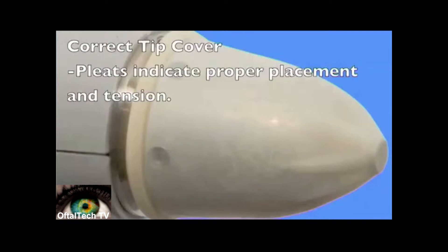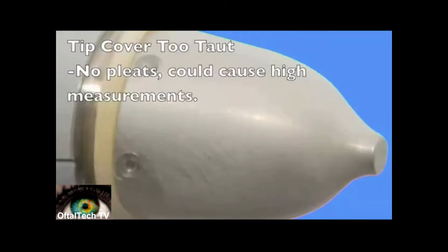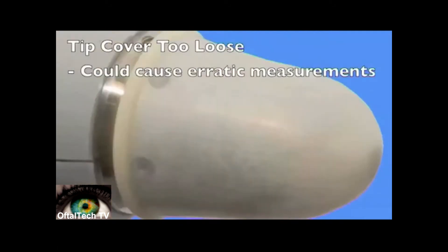Pleats indicate proper tension while allowing the transducer pin to move freely. Tip covers that are too tight could introduce false resistance to the transducer pin and IOP measurements could read higher. Tip covers that are too loose can fold over or crease and possibly create erratic measurements with your AccuPen tonometer.